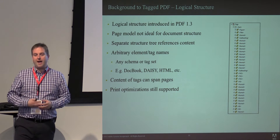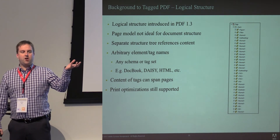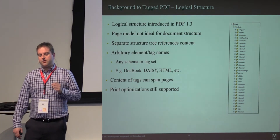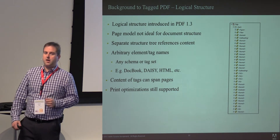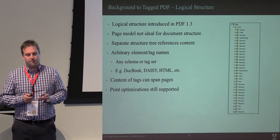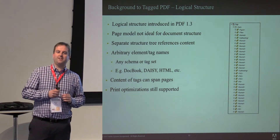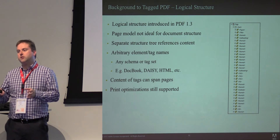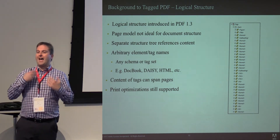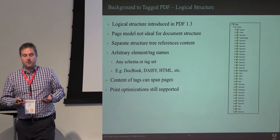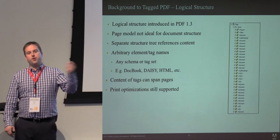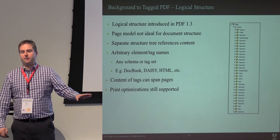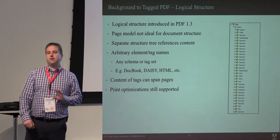The second foundational concept was the logical structure, introduced in PDF 1.3. A logical structure is a tree that represents the concept of the document. The order is defined by traversing that tree, and items in the tree have semantic meaning. At that point there was no tag set and no intent to convey semantics interchangeably — the idea was that companies would do this for their own use in their own processing systems. It wasn't really intended to be interchangeable.